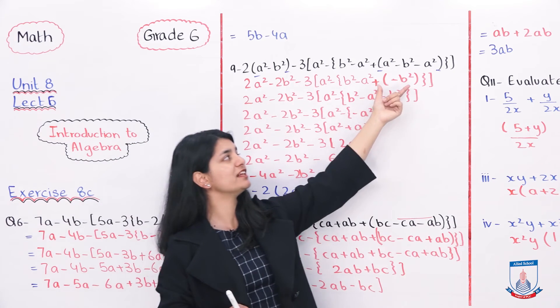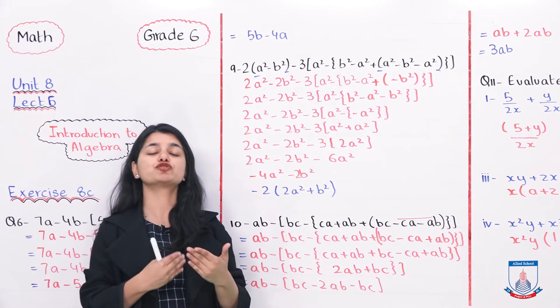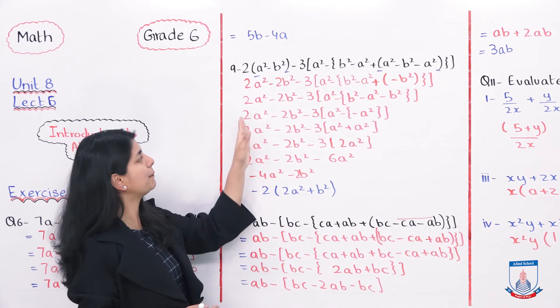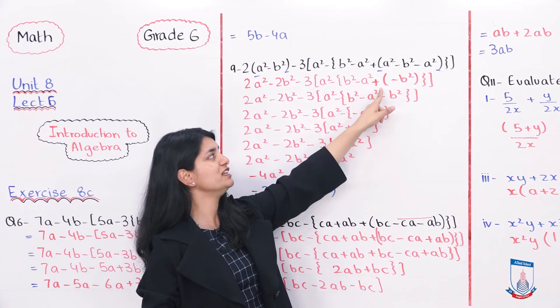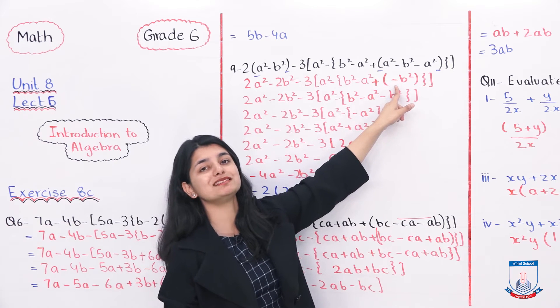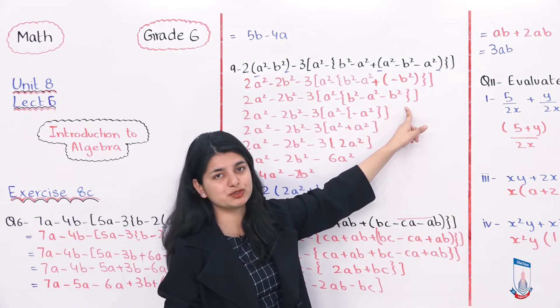Once you have that, our next step now would be opening this bracket. Yeh jo minus B square yahan parenthesis ke andar hai, usko baahir leke aana hai. Uske liye aap phir se sara question as it is copy karenge. Yahan per aap uska sign change karenge, kyunki plus tha, wo minus se multiply ho raha, parenthesis ke andar wale. And our number becomes minus B square.